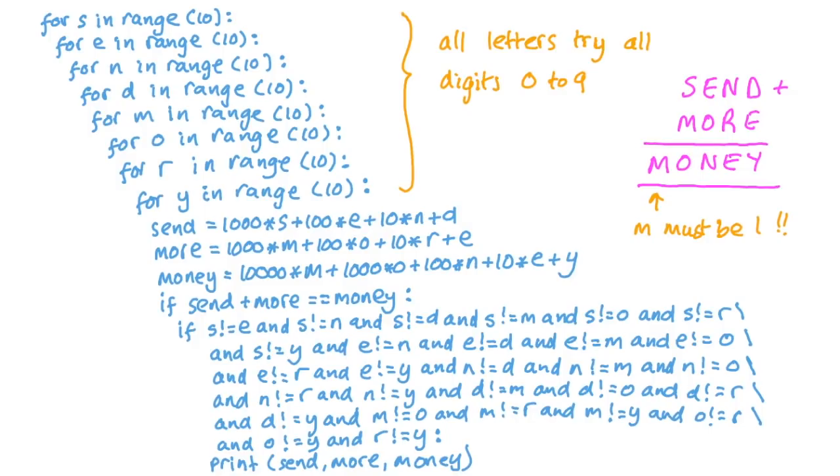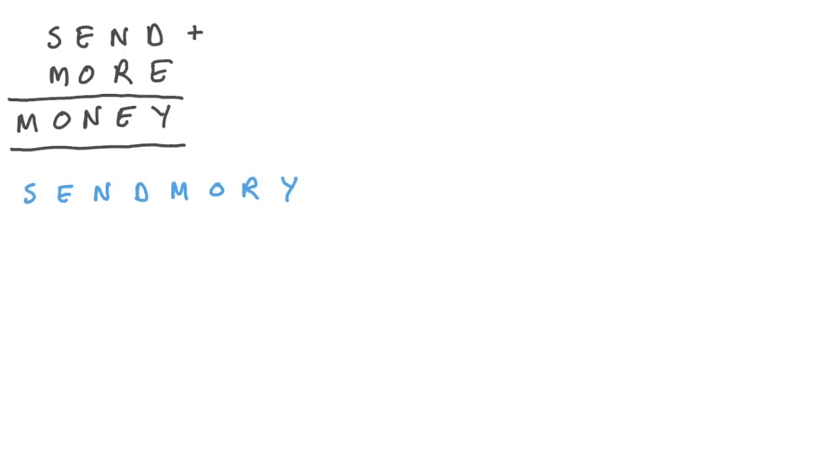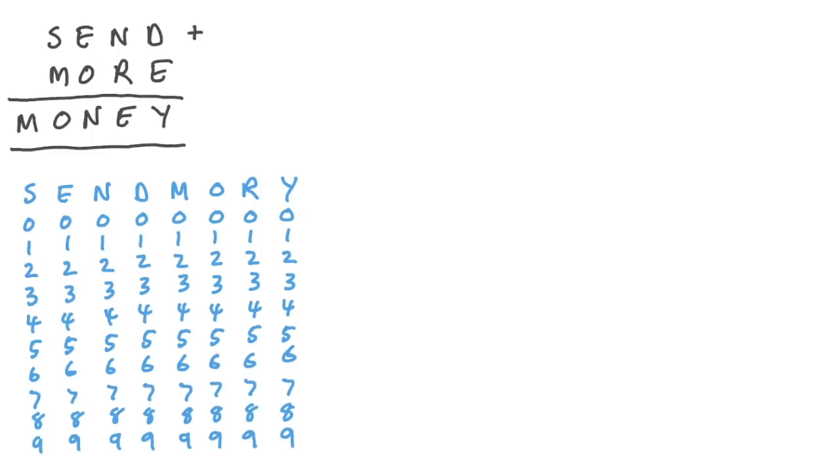First thing, make a list of all the unique letters in your puzzle. We could make a table of their possible values from 0 to 9 and cross them off as we eliminate all the possibilities. For example, we said none of the leading digits can be 0, so S and M can't be 0, so we can cross them off.